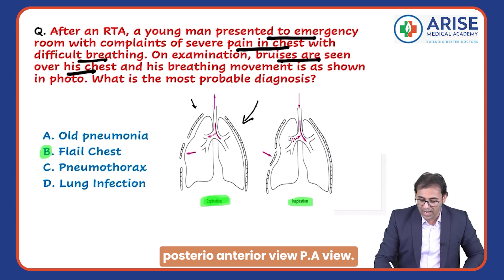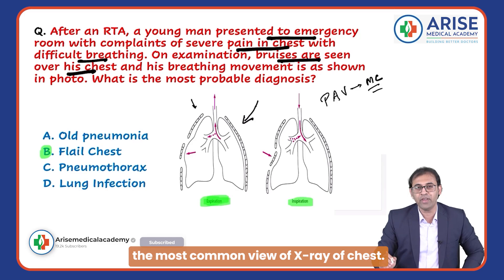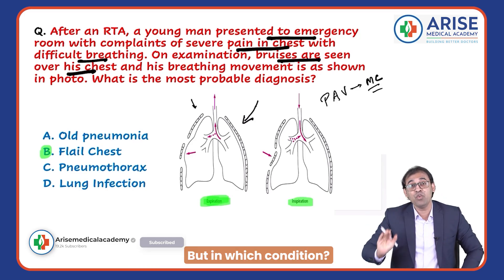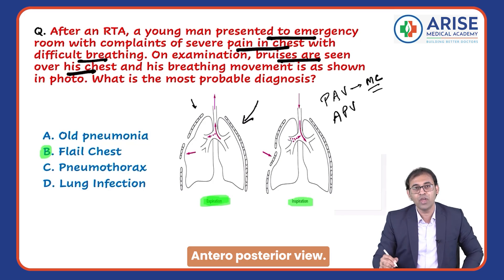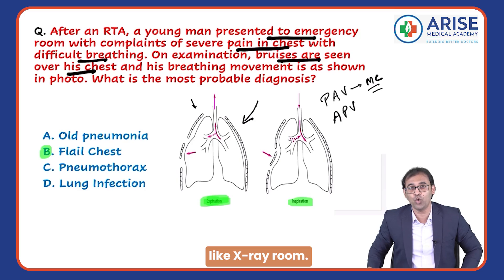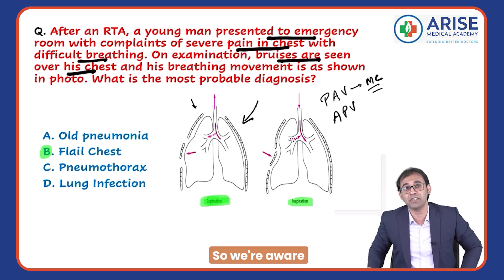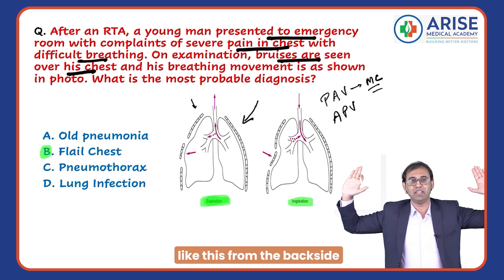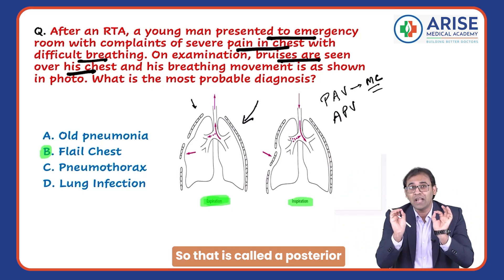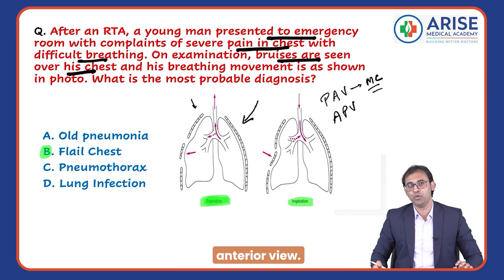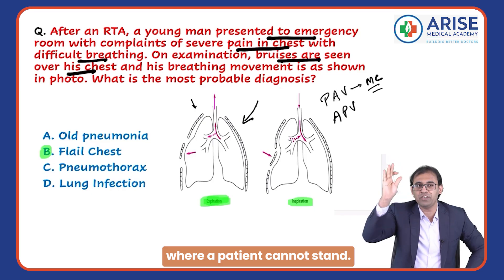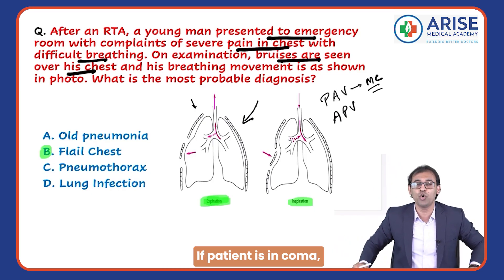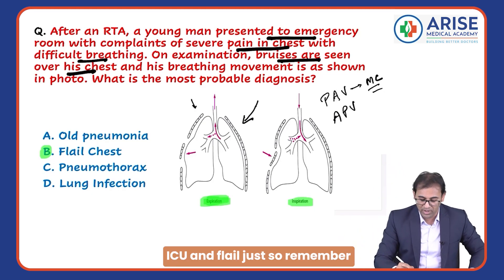First of all, what should be the view of your X-ray? Remember, the most common view of X-ray for the chest is the posterior-anterior (PA) view. When you visit the X-ray room, the technician will ask you to stand with your back facing the radiation source — that is called the posterior-anterior view. In which conditions do you do the AP view (anterior-posterior view)?